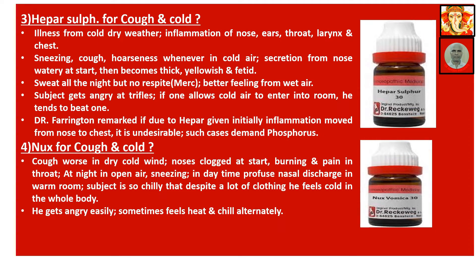Hepar Sulph for cough and cold: illness from cold, dry weather. Inflammation of nose, ear, throat, larynx and chest. Sneezing, cough, hoarseness whenever in cold air. Secretion from the nose is watery at start, then becomes thick. Sweat all through the night but no relief — we can get this symptom in Mercurius also. Better feeling from moist air. Subject gets angry easily; if one allows cold air to enter the room, he tends to become violent. Dr. Farrington remarked: if due to Hepar Sulph given initially, inflammation moves from nose to chest, that is undesirable. Such cases demand Phosphorus — that is rectification of the remedy.